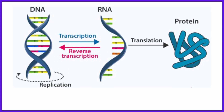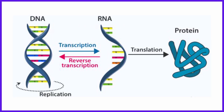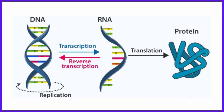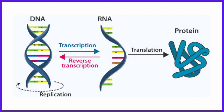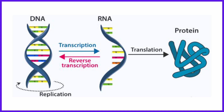In molecular biology, the central dogma illustrates the flow of genetic information from DNA to RNA to protein. It is defined as a process in which the information in DNA is converted into a functional product.